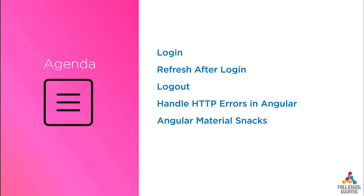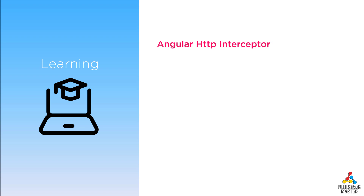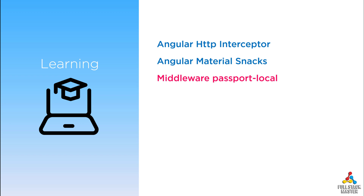Let's see after finishing this session what you are going to learn. First, you will learn how in Angular you can create an HTTP interceptor to handle global Angular HTTP errors. Next, you will learn how we can use the Angular Material snacks module to pop up and show messages and auto close them. Next, on the server side, you will learn how Passport Local is used in Express.js as middleware for authenticating revisitors.